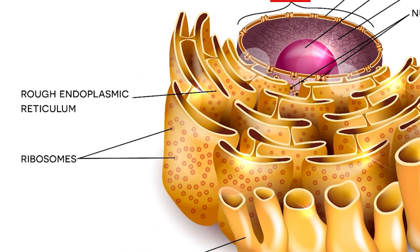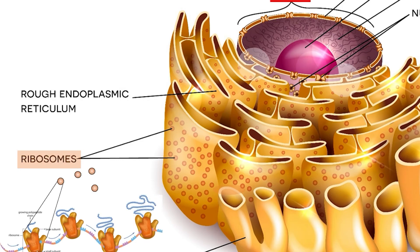The rough endoplasmic reticulum is a series of flattened discs that extend directly from the lipid bilayer that surrounds the nucleus. These flattened discs are covered with ribosomes. Unlike the loose ribosomes in the cytoplasm, these membrane-bound ribosomes deposit newly created polypeptides directly into the sac they are connected to. The lumen of the ER — the inside of the sacs — contains the perfect environment to fold certain proteins.